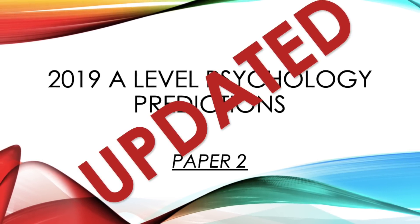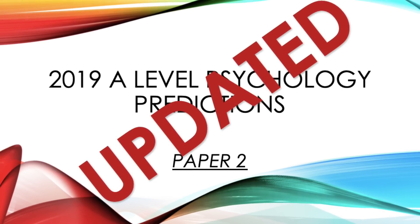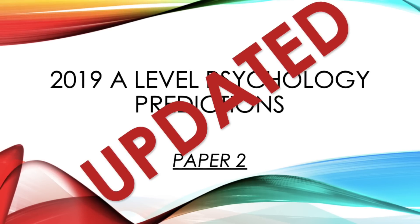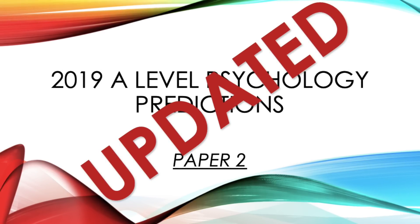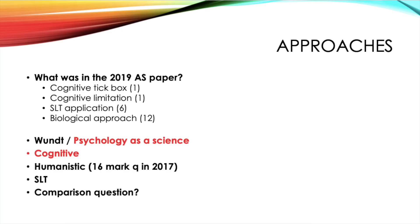My predictions within this video haven't actually changed too much from the first video, but I thought it was quite useful to see what was in the 2019 AS paper 2 for some of the different sections. In that paper you had a cognitive tick box question, a question on the limitation of the cognitive approach, a social learning theory application question, and then a 12-mark question on the biological approach.